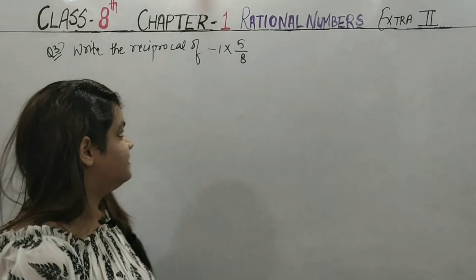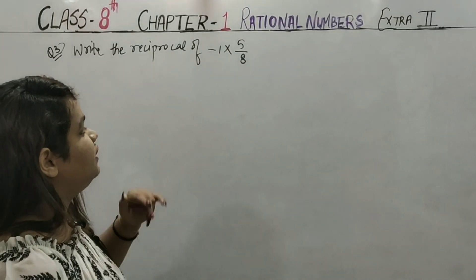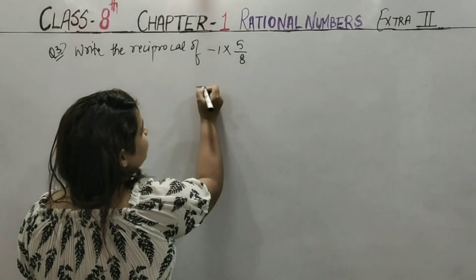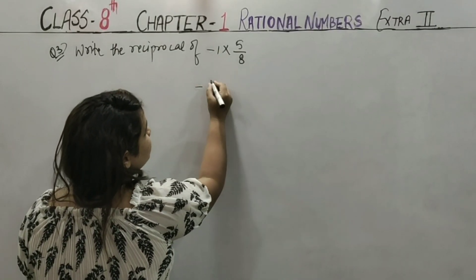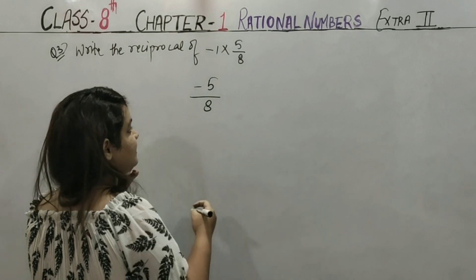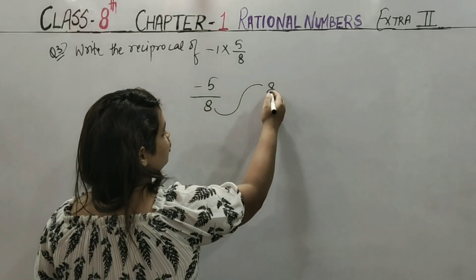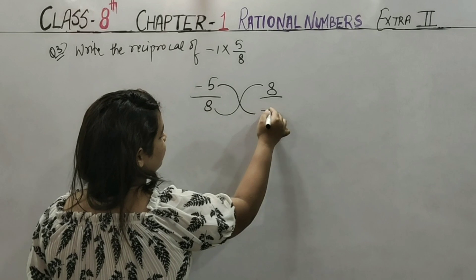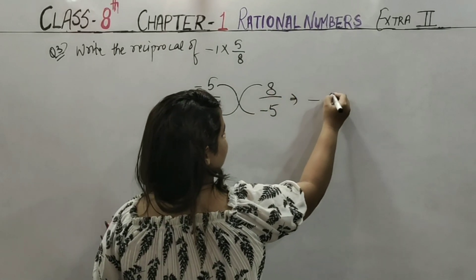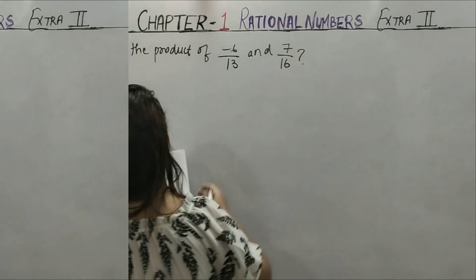Third question says: write the reciprocal of −1 × 5/8. First, solve it: −1 × 5 = −5, so we get −5/8. Now find its reciprocal — the denominator becomes numerator and the numerator becomes denominator. The negative sign stays. So the reciprocal is −8/5.